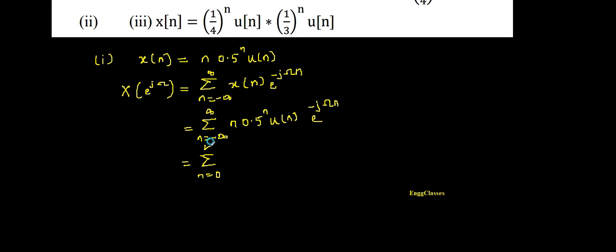Inside we have n * 0.5^n * u[n], its amplitude is 1, and we are left with e^(-jωn). Can I simplify this further?